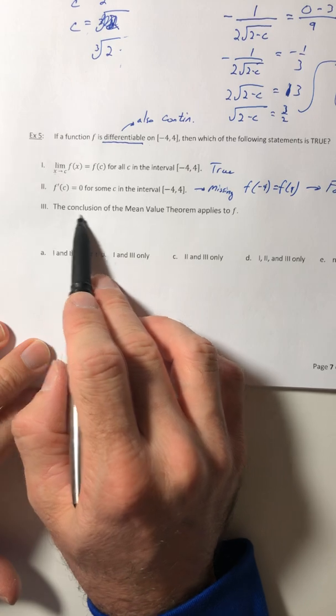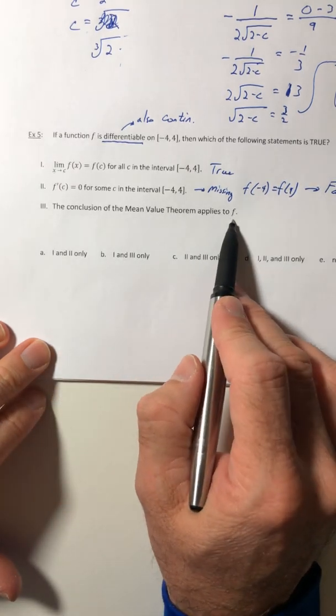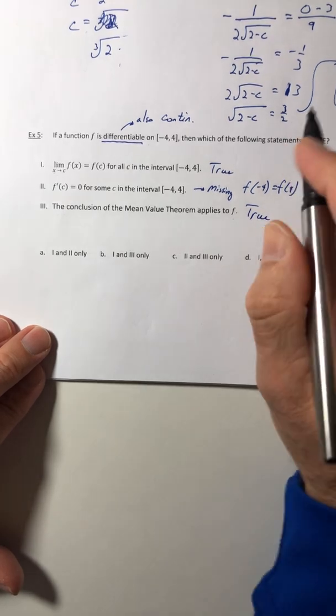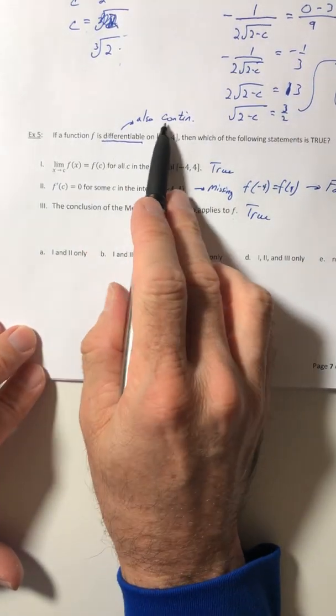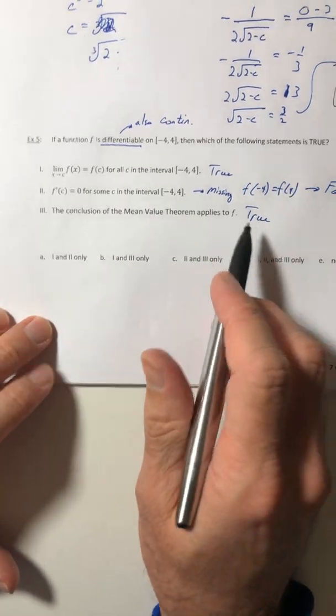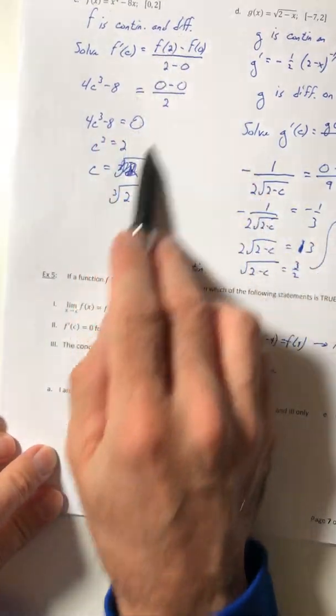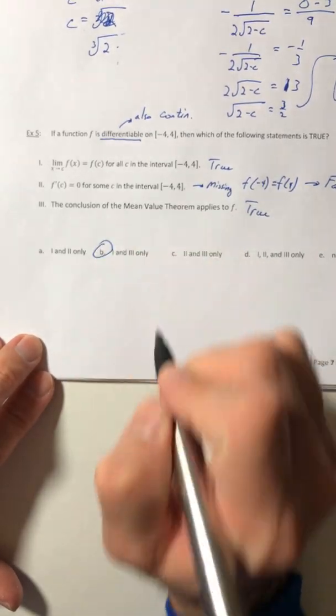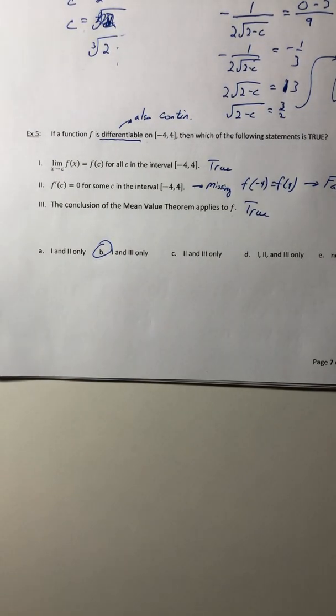Okay, third statement. The conclusion of the mean value theorem applies to f. Well, this one is going to be true. Because the mean value theorem just says it had to be continuous and differentiable. And you know that it is. So then you could go through and do this if you actually had the function. So one and three are true. So part or answer B.